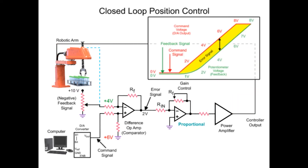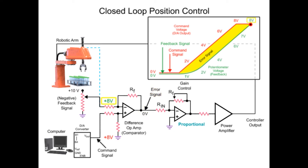The robotic arm moves to the desired position until the error signal at the difference op-amp is zero. When the arm reaches the desired position, the difference op-amp voltage is reduced to zero and the feedback voltage from the potentiometer equals the command voltage of the computer.